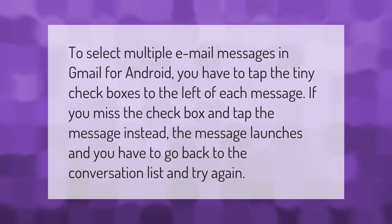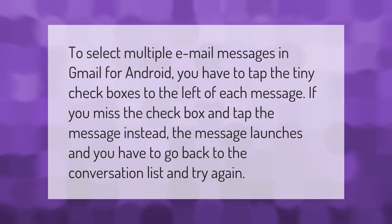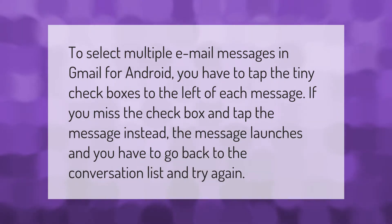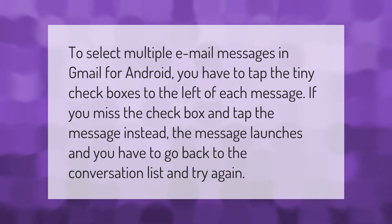To select multiple email messages in Gmail for Android, you have to tap the tiny checkboxes to the left of each message. If you miss the checkbox and tap the message instead, the message launches and you have to go back to the conversation list and try again.